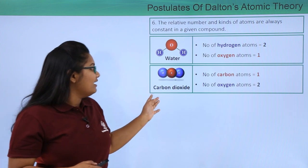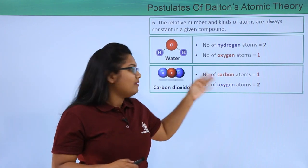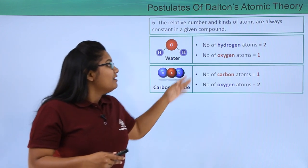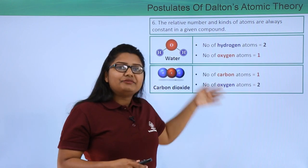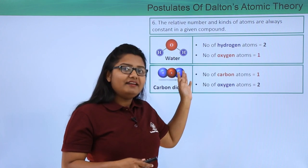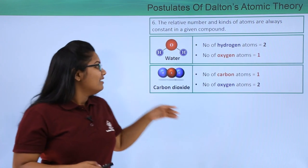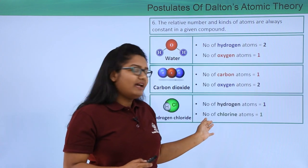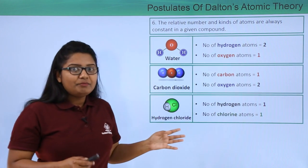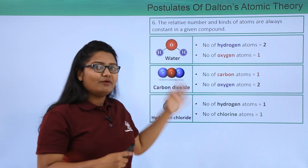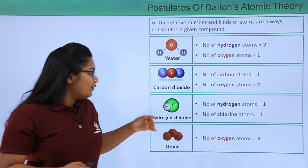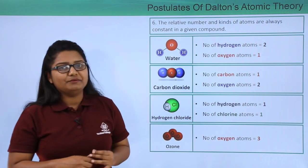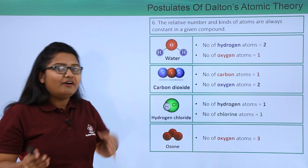The same applies to carbon dioxide, which always has one carbon atom and two oxygen atoms — we cannot have a carbon dioxide molecule with two carbon atoms and three oxygen atoms. For hydrogen chloride, the number of hydrogen and chlorine atoms is always one and one. And for ozone, it is always three oxygen atoms that combine — it can neither be four nor two.